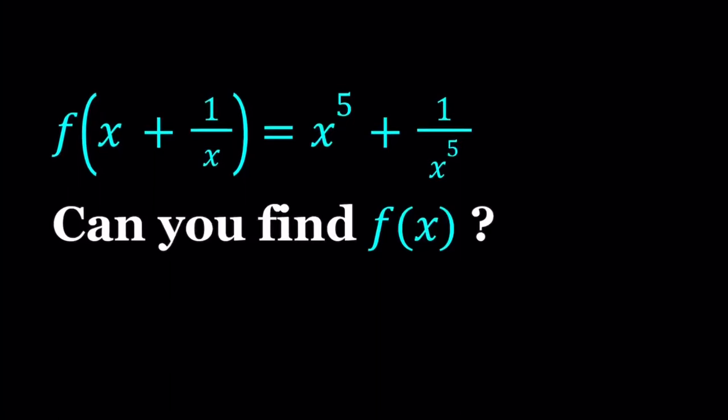Hello everyone. In this video we're going to be solving a functional equation. This problem is sort of homemade because I haven't seen this problem anywhere else, but easily anyone can come up with a problem like this. We have f of x plus 1 over x equals x to the 5th power plus 1 over x to the 5th power, and we're supposed to find an expression for f of x. I'll be presenting three methods. Let's start with the first one.